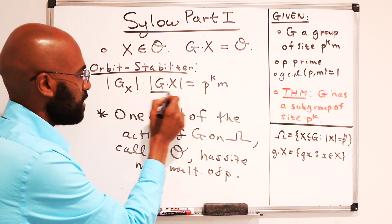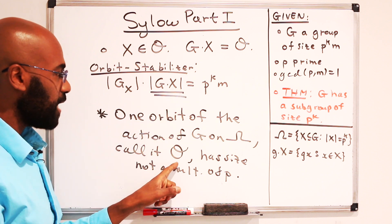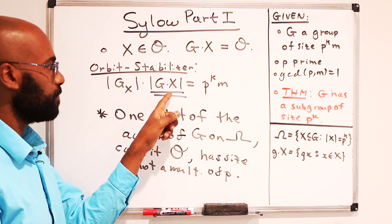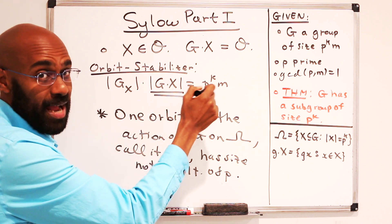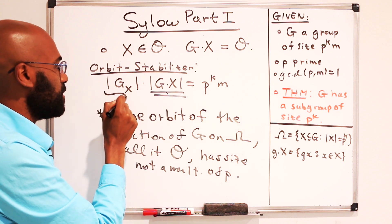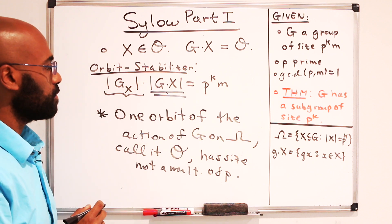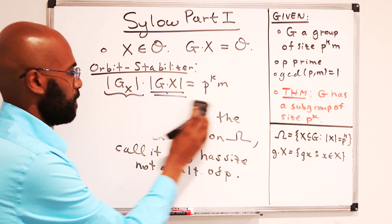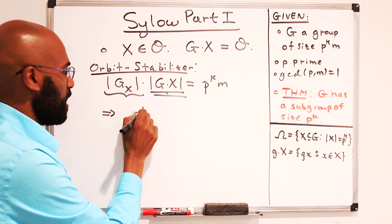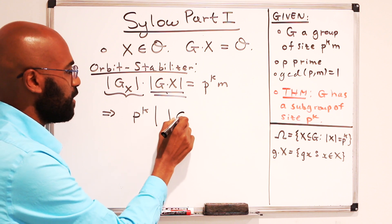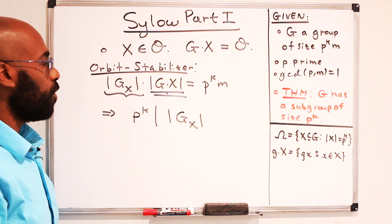But we're saying that this thing here, this is the size of this orbit, and the size of the orbit is not a multiple of p. So we can't have any of this factor right over here in here, that means that this piece has to have all of the p to the k inside of it. So we can say that p to the k divides the size of the stabilizer of this particular element we picked in the orbit.